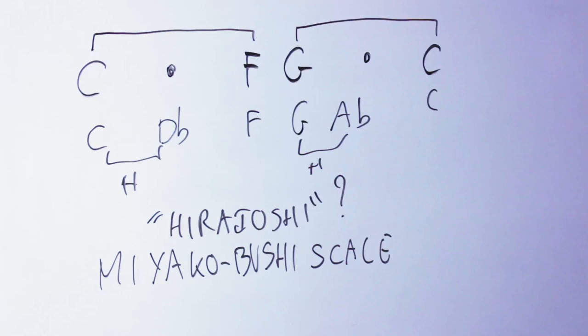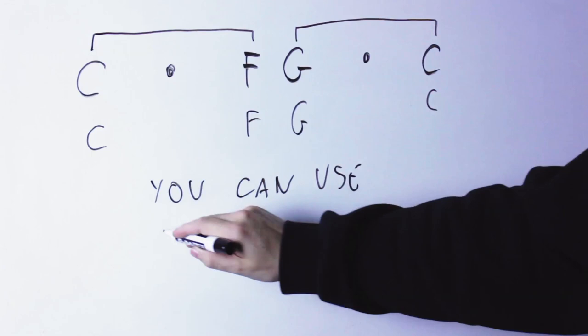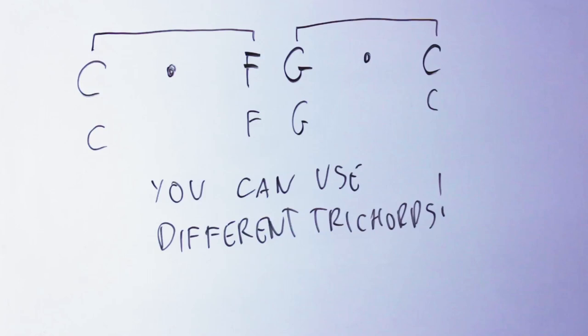Now, don't forget that those four are just the main scales that you obtain when the two trichords are exactly the same, but you can, of course, mix and match and take one trichord from one scale and another trichord from another scale. You have a lot of possibilities here, and they will sound great.